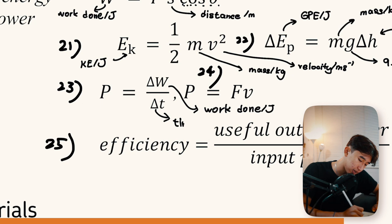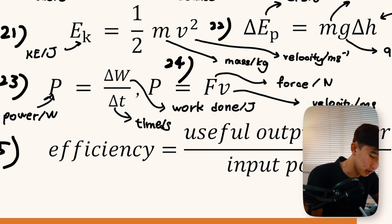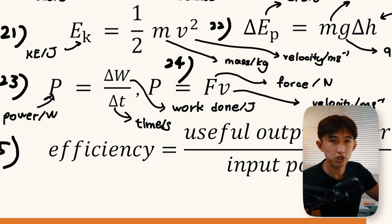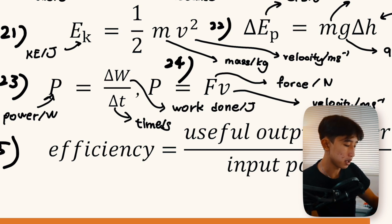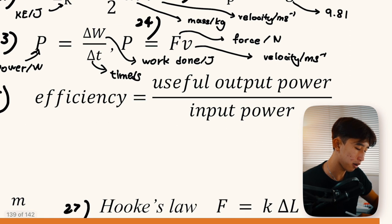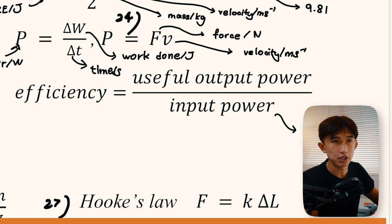Power (in watts) is defined as the rate of change of energy or work done: P = W/t. Power also equals force multiplied by velocity: P = Fv, but this only applies when force and velocity are constant — i.e., the object cannot be accelerating. Efficiency is useful output power divided by input power, and must always be less than or equal to one (or 100%), since you cannot have more useful output than input.